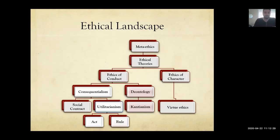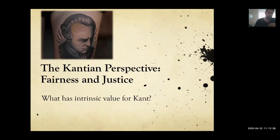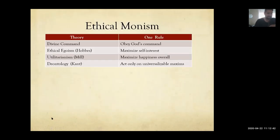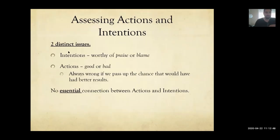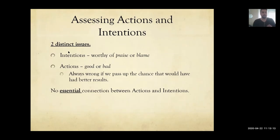So if deontology is not about the consequences of your actions, what is it about? It's going to be about your intentions. When we talk about deontology and judging whether something is right or wrong, Kant is going to say you have to examine the person's intentions. The actions and the consequences of the actions aren't really what you should be examining when trying to determine whether somebody is right or wrong.